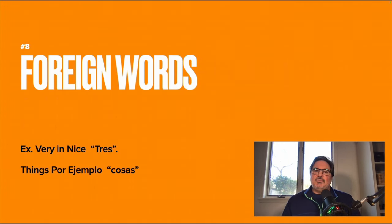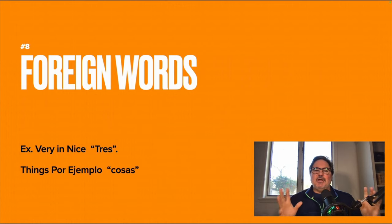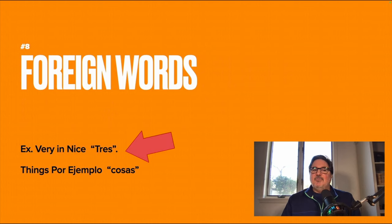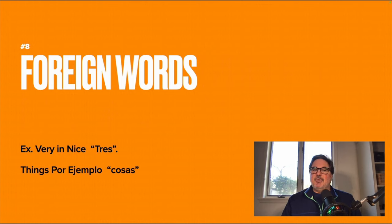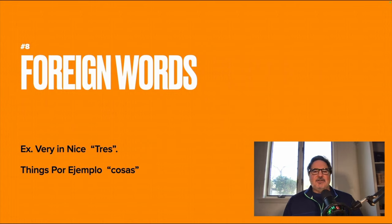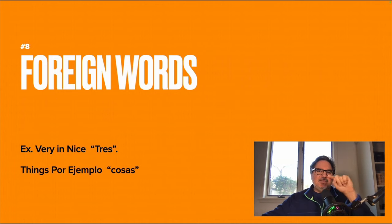Number eight: foreign words. A lot of times you'll see foreign words in clues and they're not explicitly telling you it's a foreign word. For example, 'very in Nice' — if you re-read it as 'very in Nice' (Nice being a city in France), the question becomes how do you say 'very' in French? The answer is 'très.' Or a clue might say 'things, por ejemplo' — because 'por ejemplo' is Spanish for 'for example,' the answer would be in Spanish. How do you say 'things' in Spanish? 'Cosas.' The clue is that 'Nice' would be capitalized, indicating it's a place.